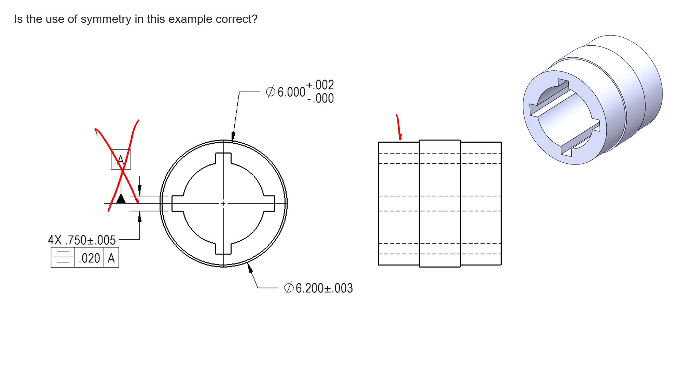Even if we attached it to maybe, let's say, this feature here, identifying this small OD as datum feature A, and we did it appropriately, and we still used symmetry about that axis to control the symmetry of these mid-planes on all four of these keyways, that's also not legal.